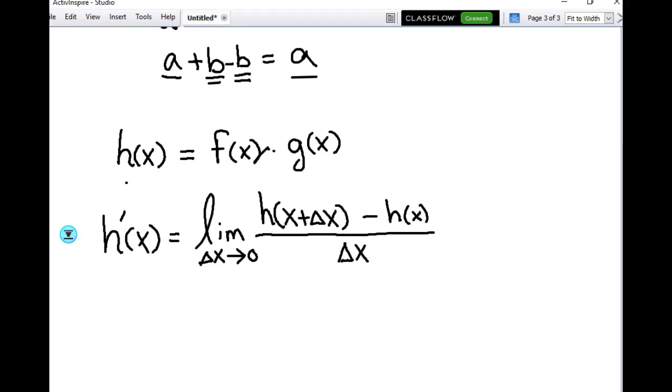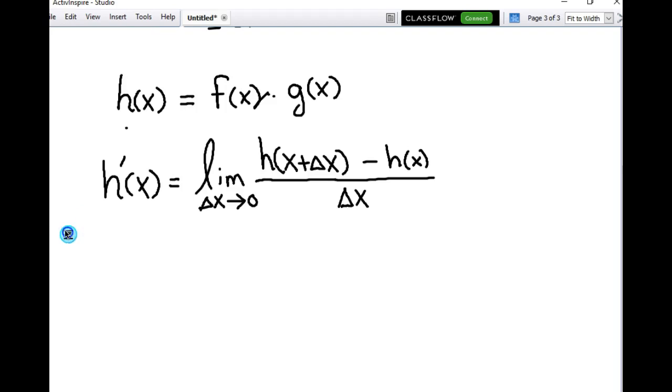Okay, so now h, as you remember, is really the product of two other functions. So, the derivative of h prime of x, then, can be rewritten like this. Instead of h of x plus delta x, we can have f of x plus delta x times g of x plus delta x, right?